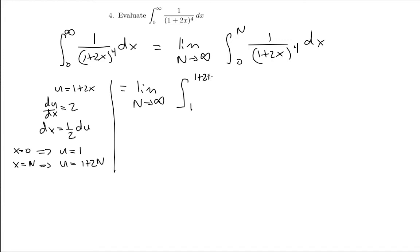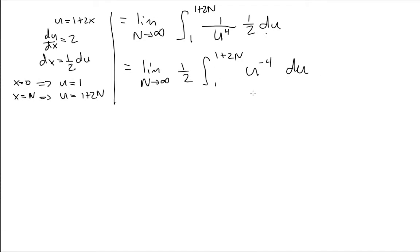So I integrate from 1 to 1 plus 2n and of course this thing on the bottom is just u to the power of 4, and my dx I know is equal to 1/2 du. This constant 1/2 can come out of the integration, so I have the limit as n goes to infinity of 1/2 times the integral from 1 to 1 plus 2n of u to the power of negative 4 du. This is now an integration I can carry out just by doing antiderivatives.